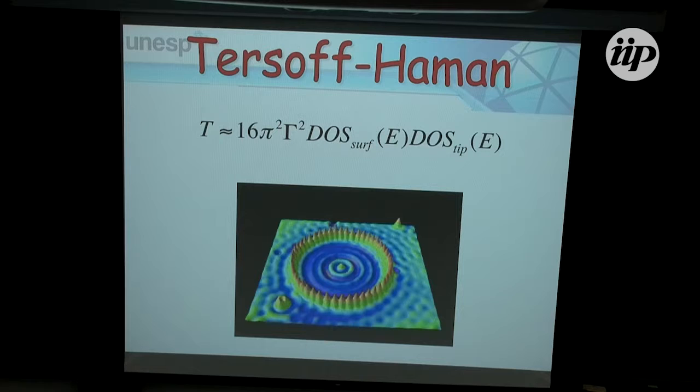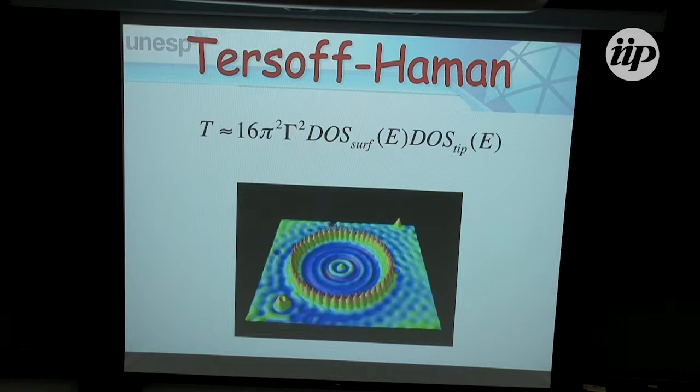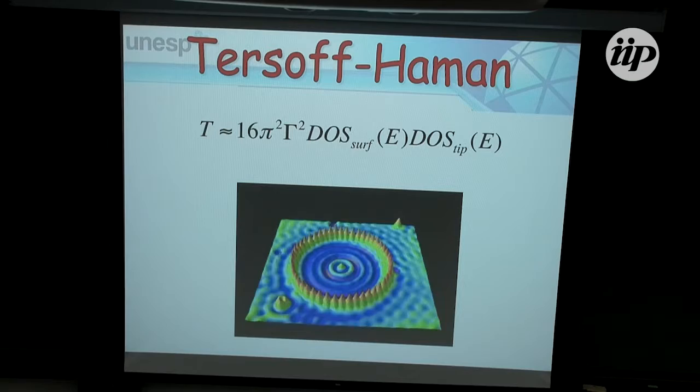This is essentially what you get if you do a Tersoff-Hamann calculation. The Tersoff-Hamann theory is not derived this way, but essentially what it says is that the current flowing from the tip in an STM is a convolution between the tip density of states and the density of states of your metallic surface.